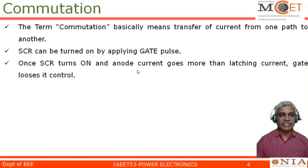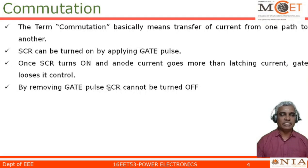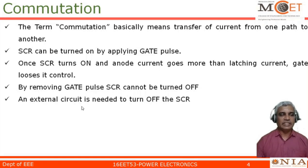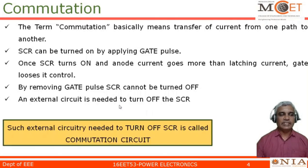During the turn-on process, I apply the gate pulse. Once the anode current becomes more than the latching current, the gate loses control, meaning I can remove the gate pulse. Removing the gate pulse does not mean that SCR will be turned off. The turn-off process has nothing to do with the gate pulse — gate pulse and turn-off process do not have any relationship. To turn off an SCR, some external circuitry is needed, and such external circuitry is what we call the commutation circuit of an SCR.